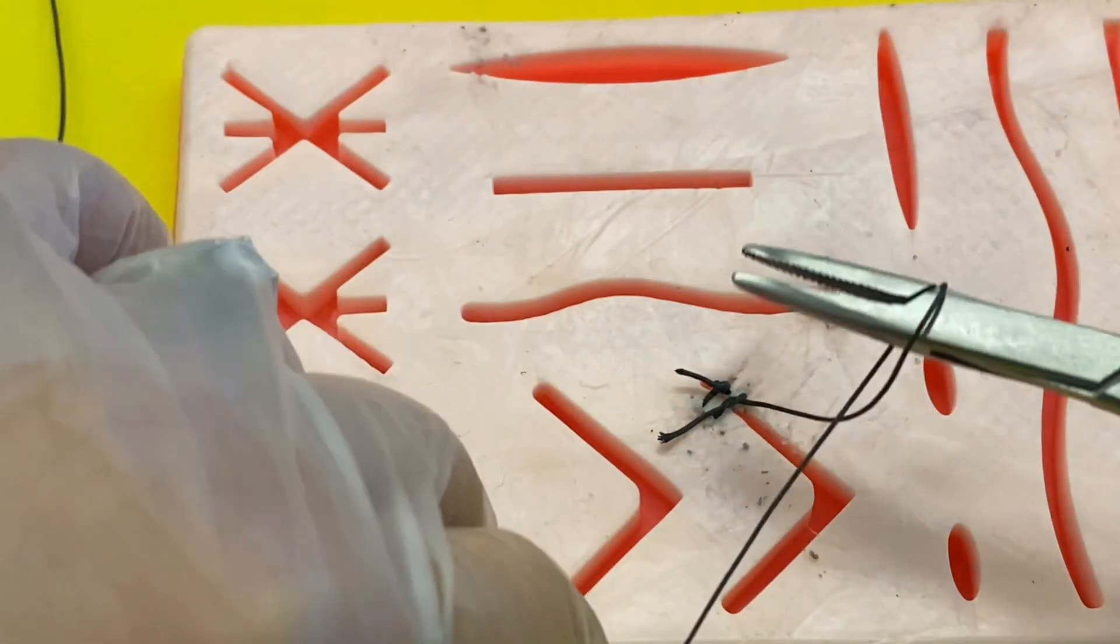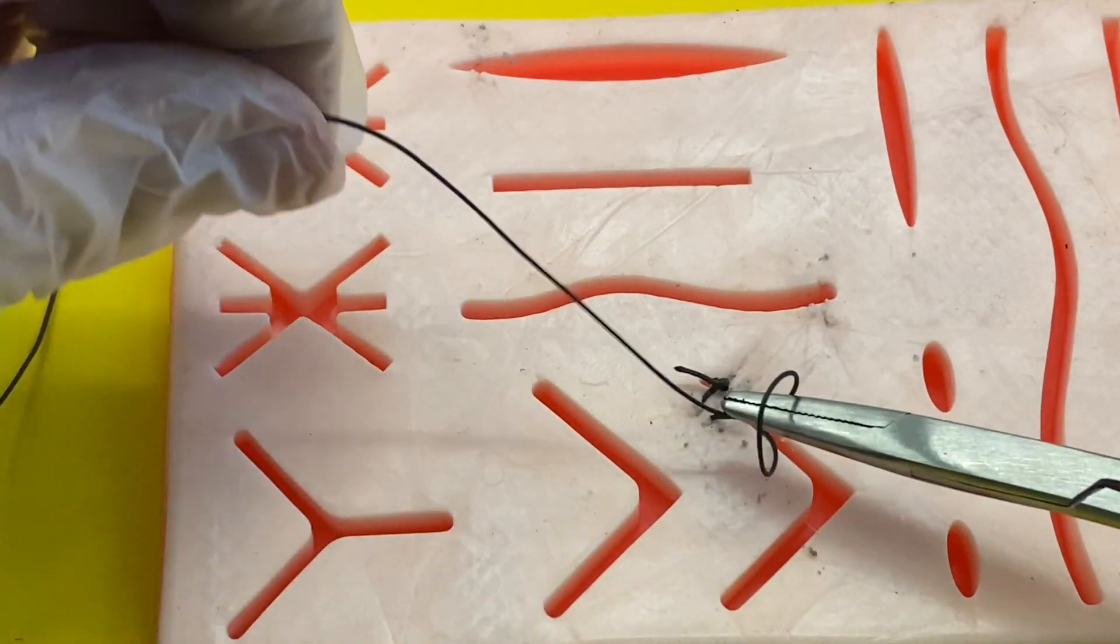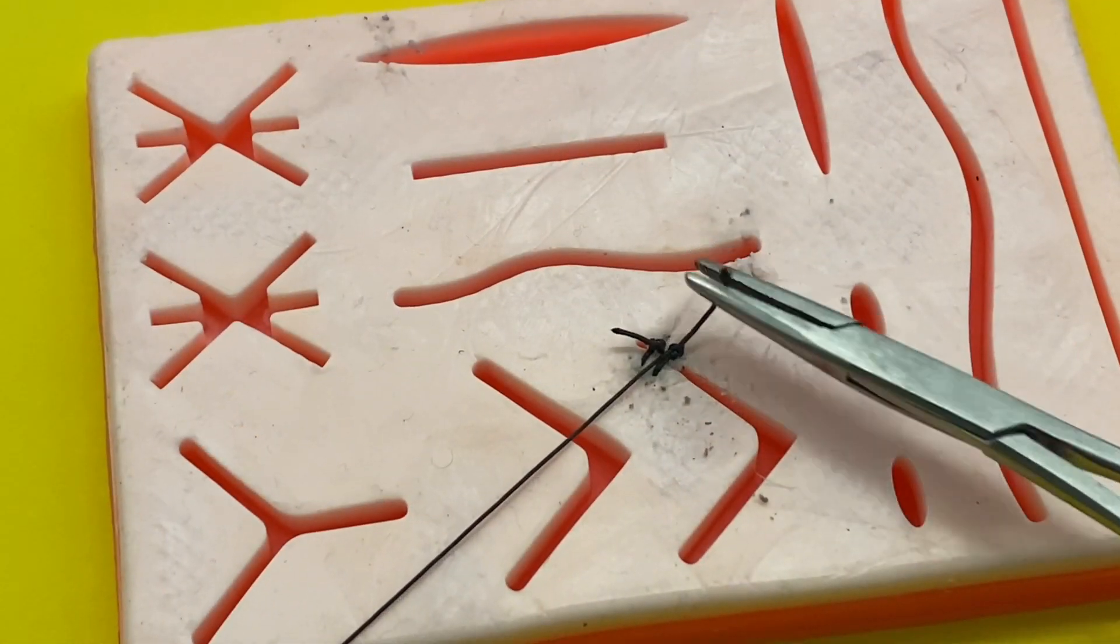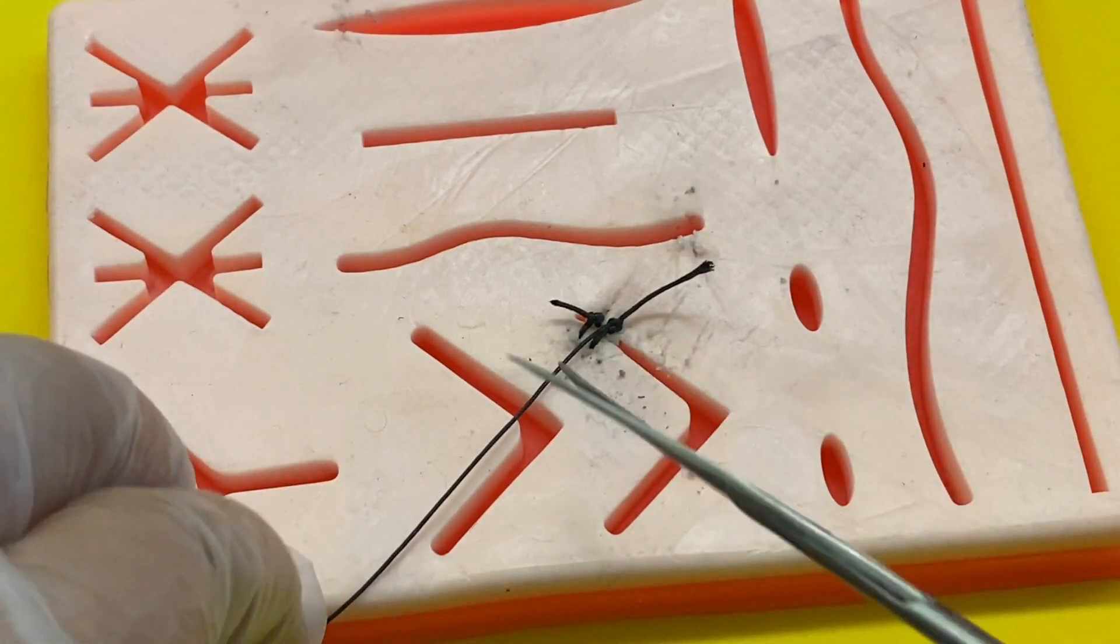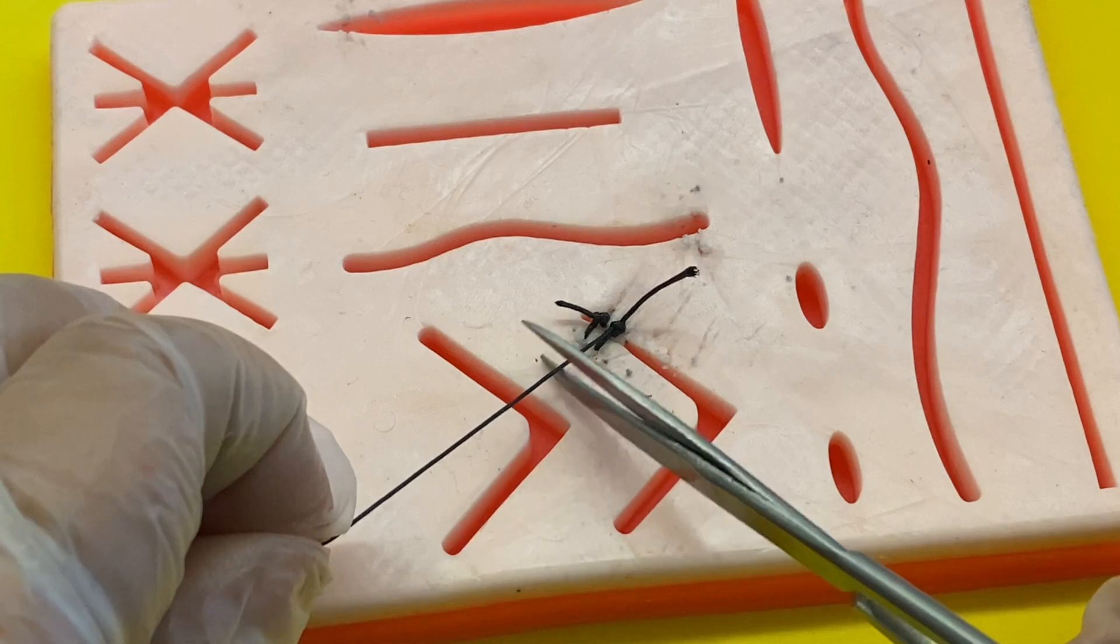And when you make your thread tight, when you make the knot, you may want to pull it to the other side, like you can see there, to make sure that it is fully secure. Then you're going to cut off the excess again.